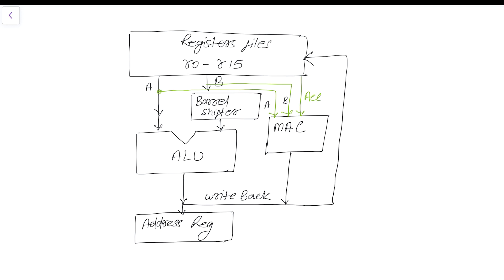There are two things to notice: if the result produced from the ALU is data, then it will be written back to the register. If the decoded result from the ALU is an address, then it will write the address register. Once the address register has been written, to access the next instruction it will simply increment it.